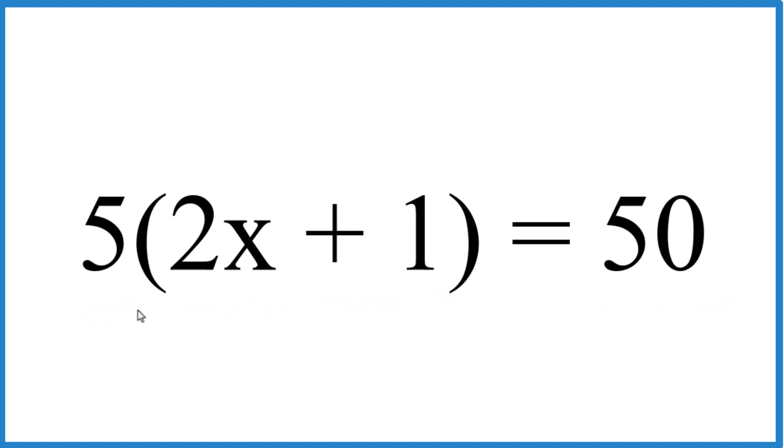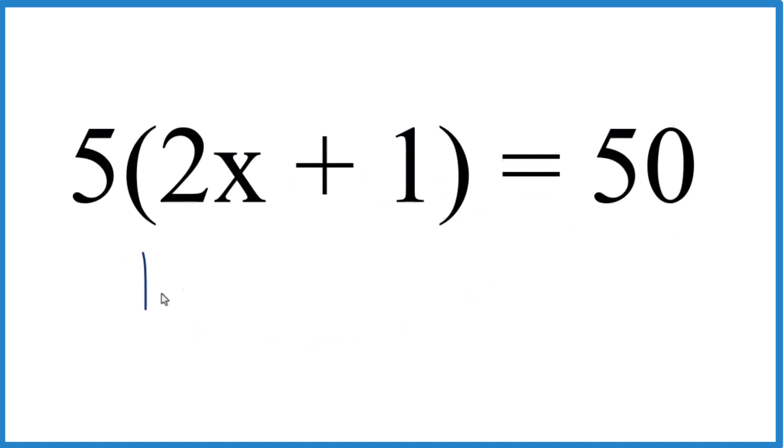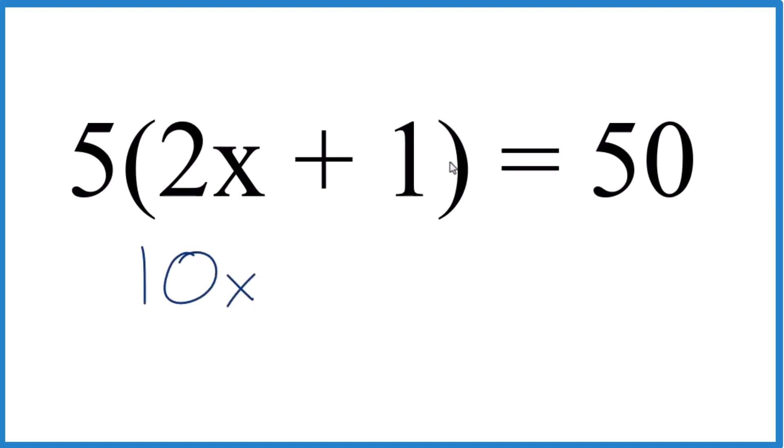So first off, let's distribute the 5 here across this whole term in parentheses. 5 times 2 is 10, so we get 10x here. 5 times 1, that's 5. So we have 10x plus 5 equals 50.